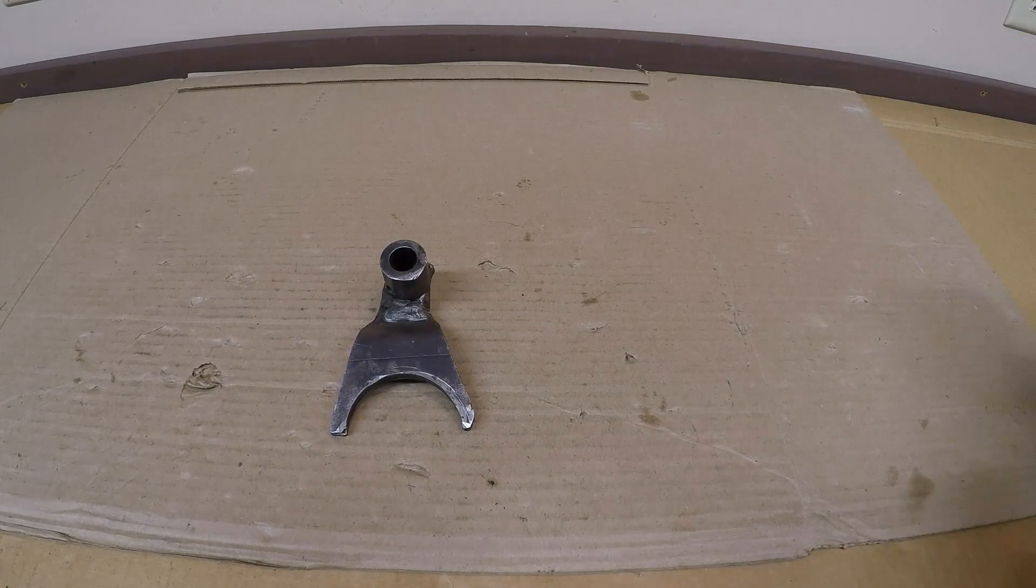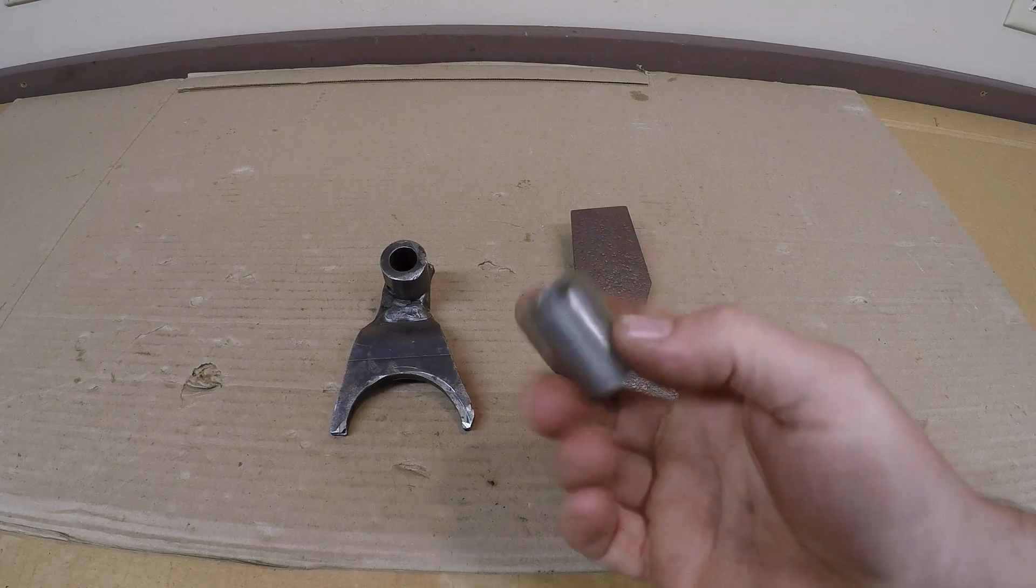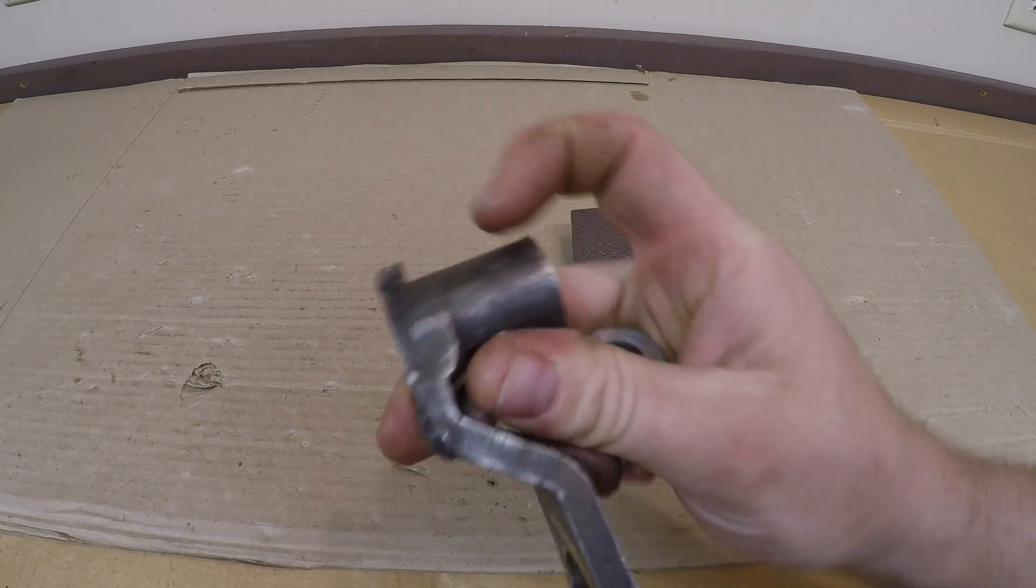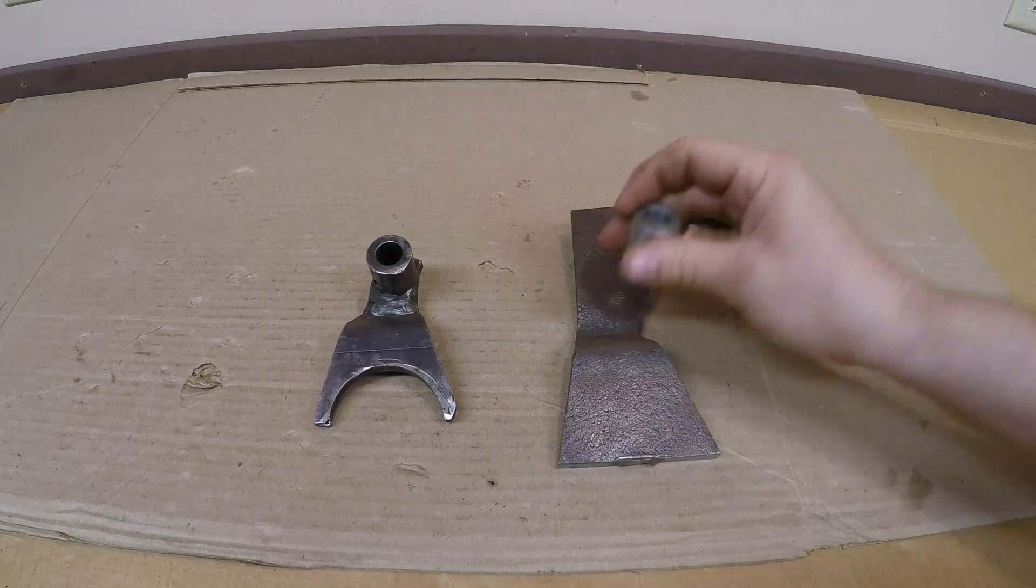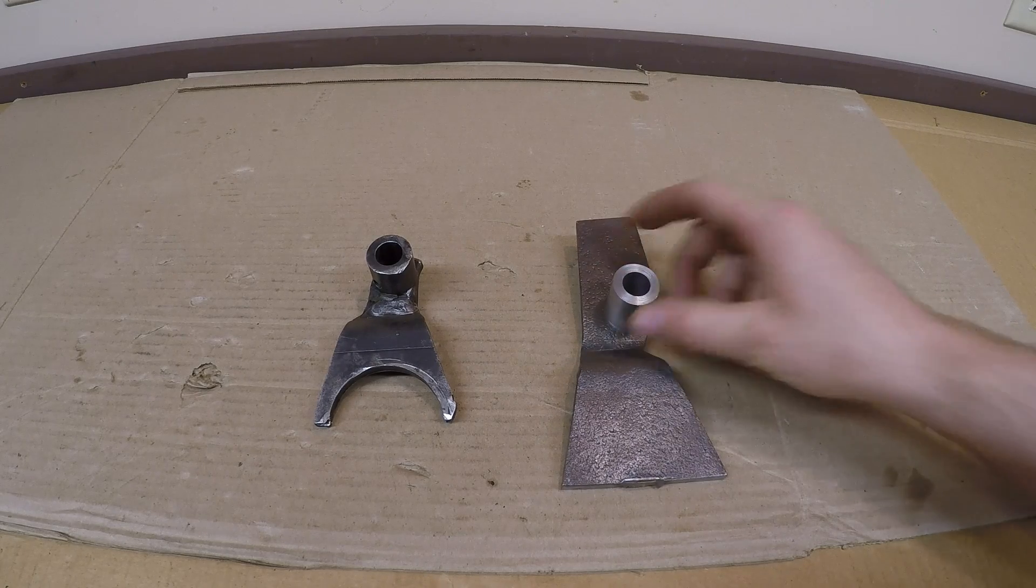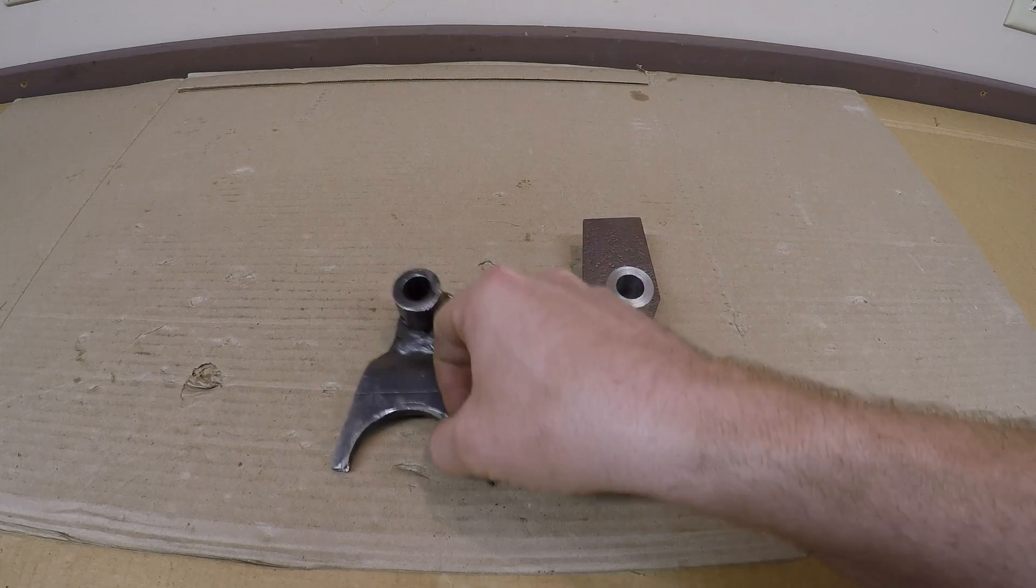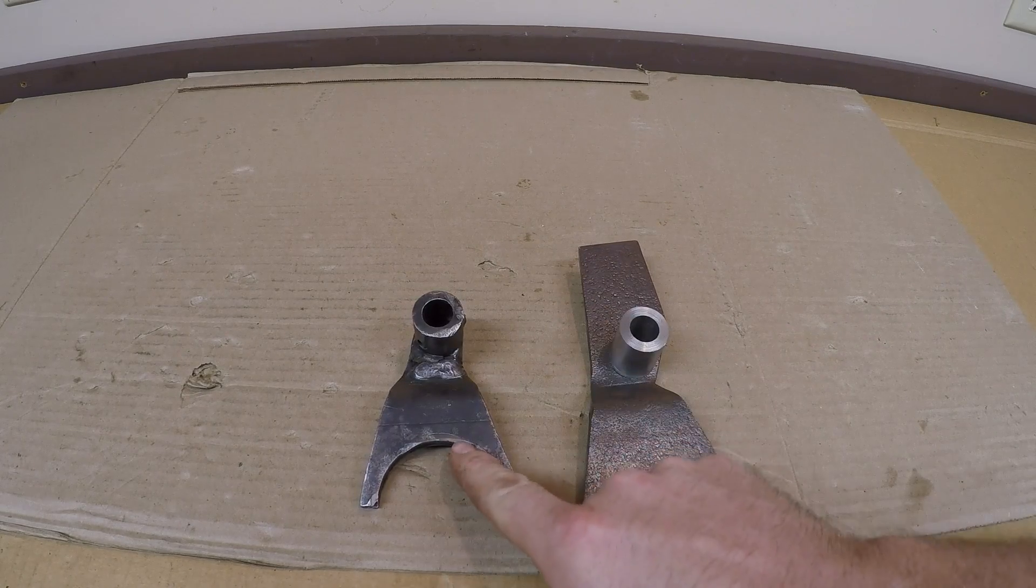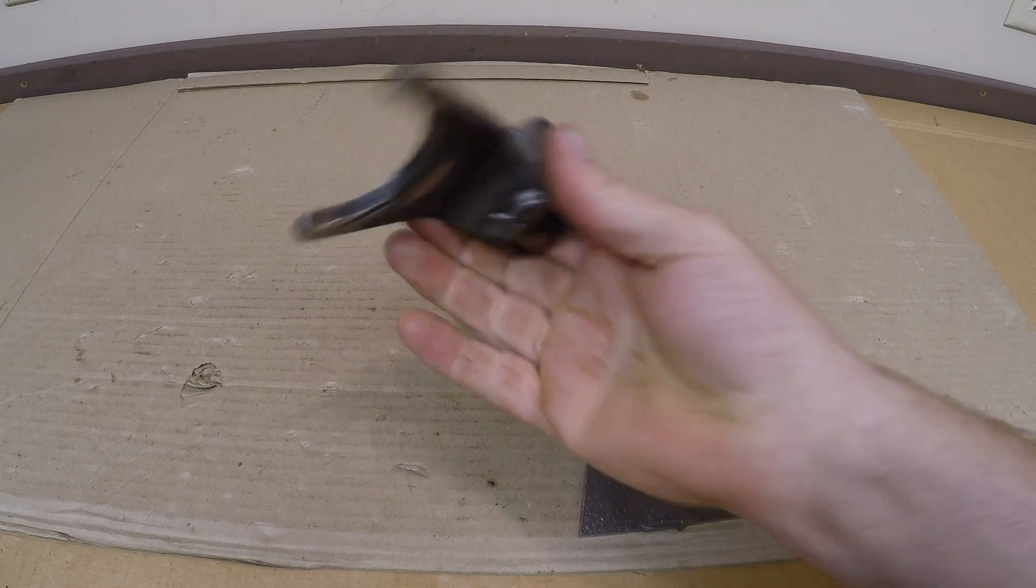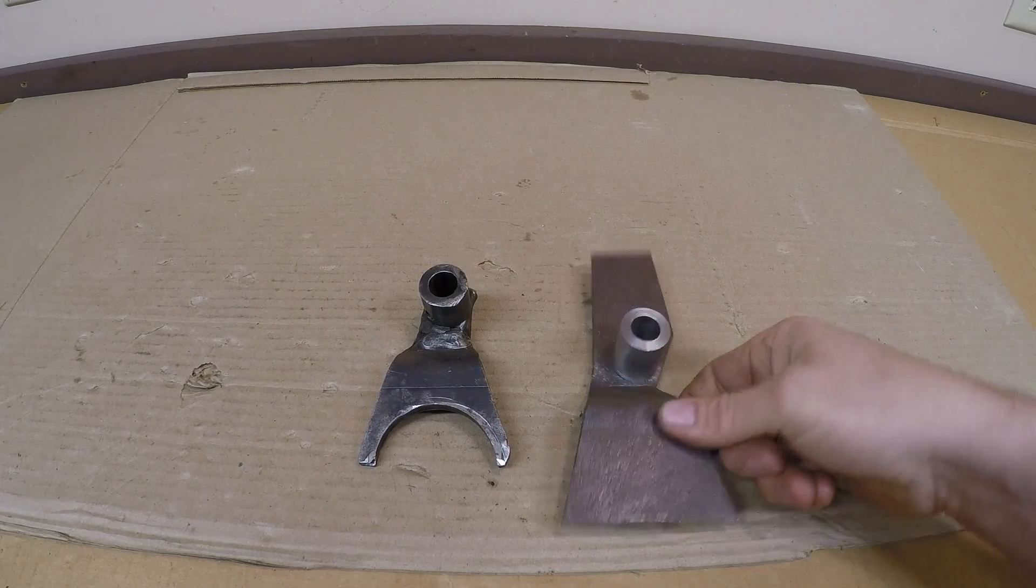If you remember from the last episode, I turned out the collar—a duplication of this part of the old fork. That collar needs to be welded and positioned onto the new two-three shift fork blank accurately.